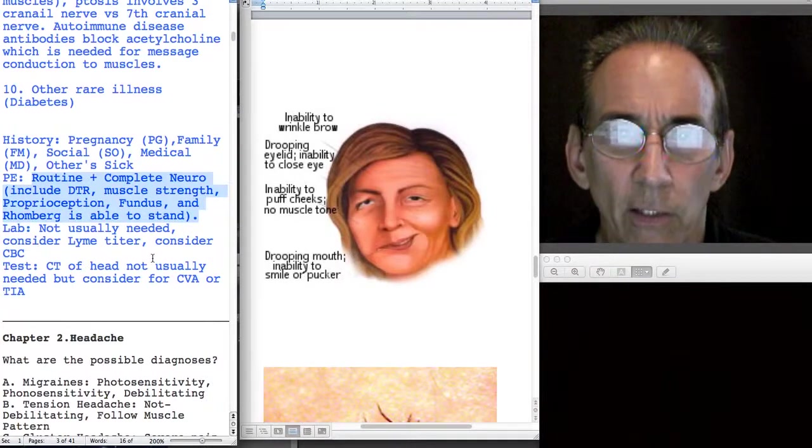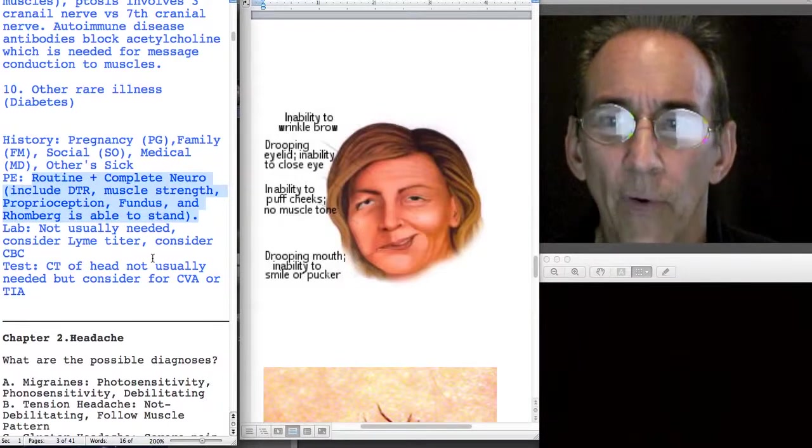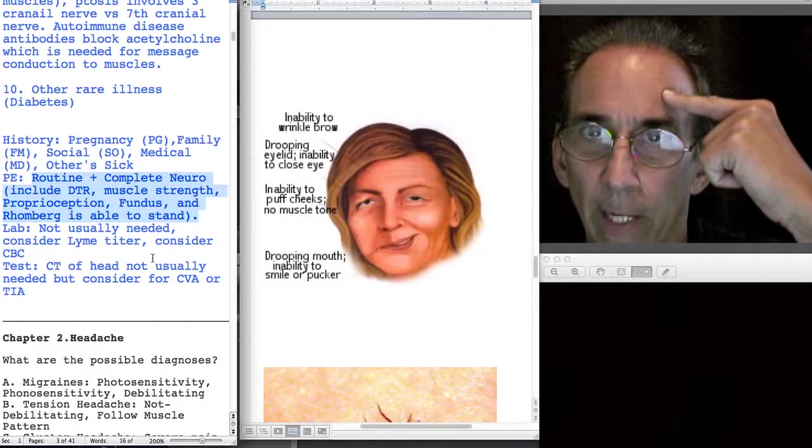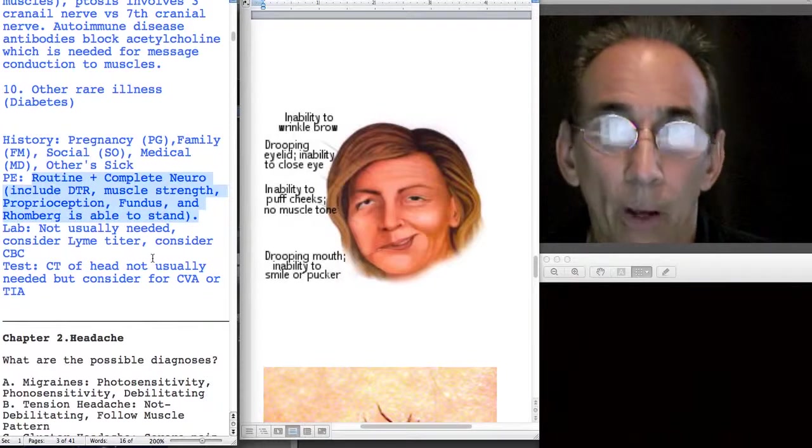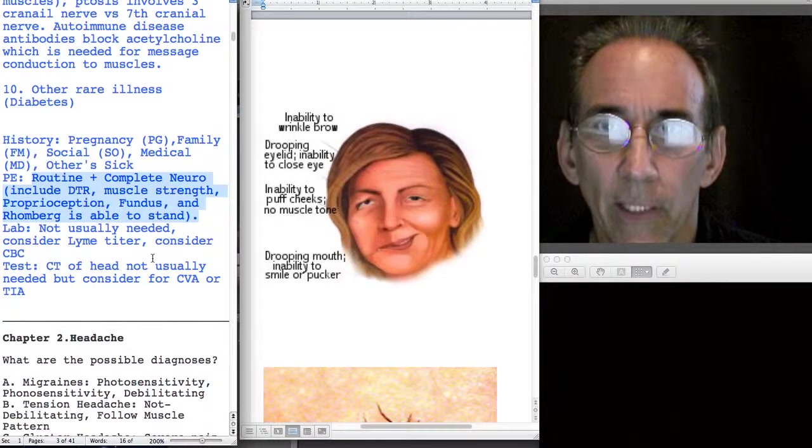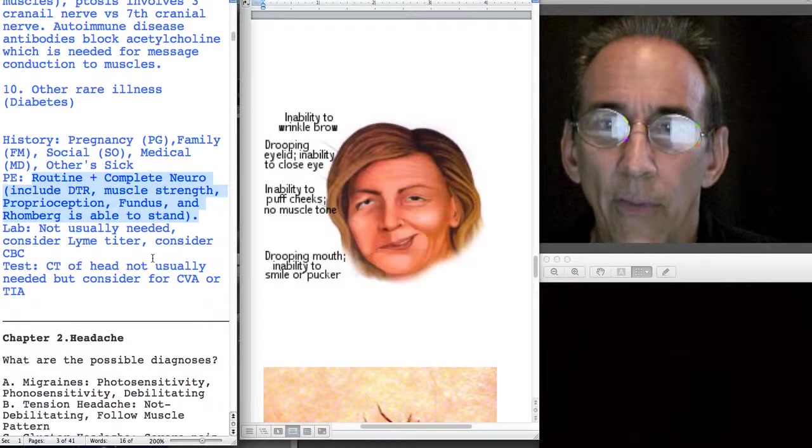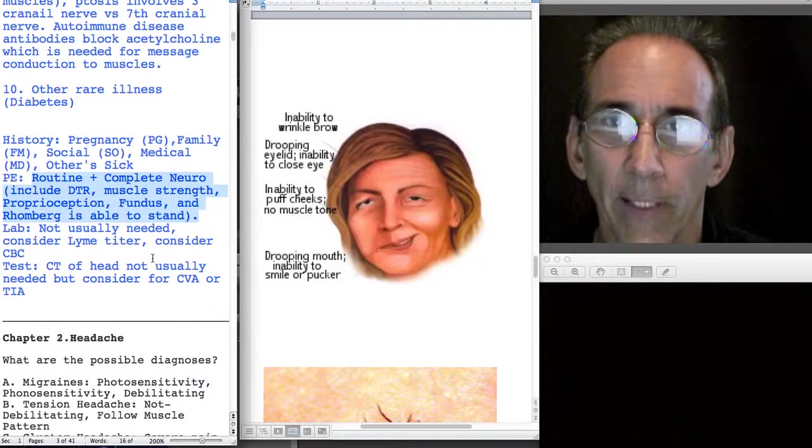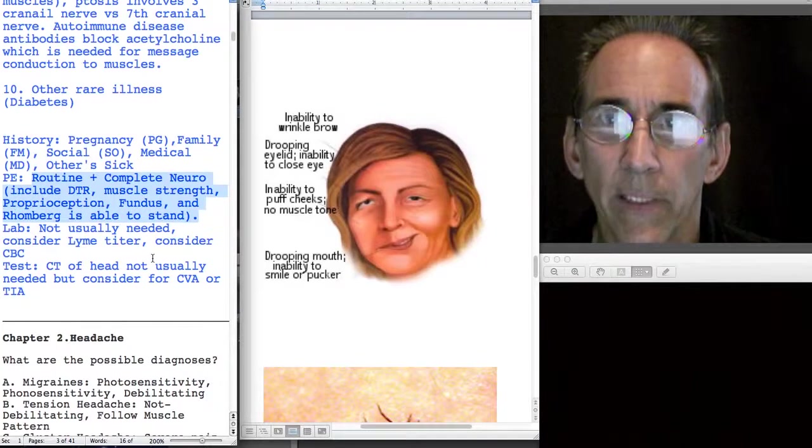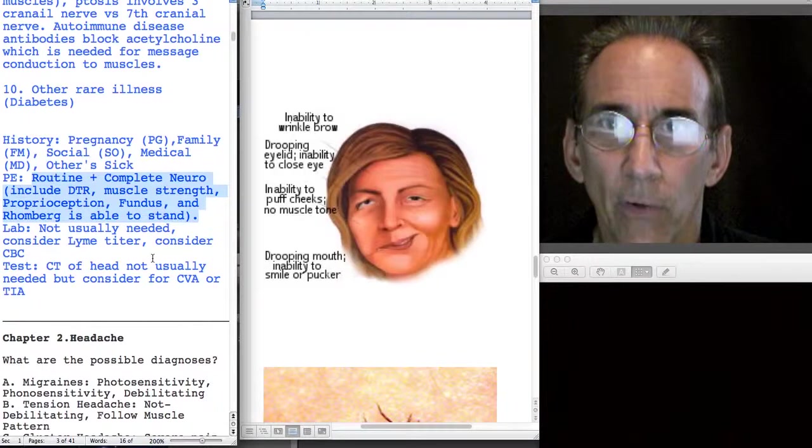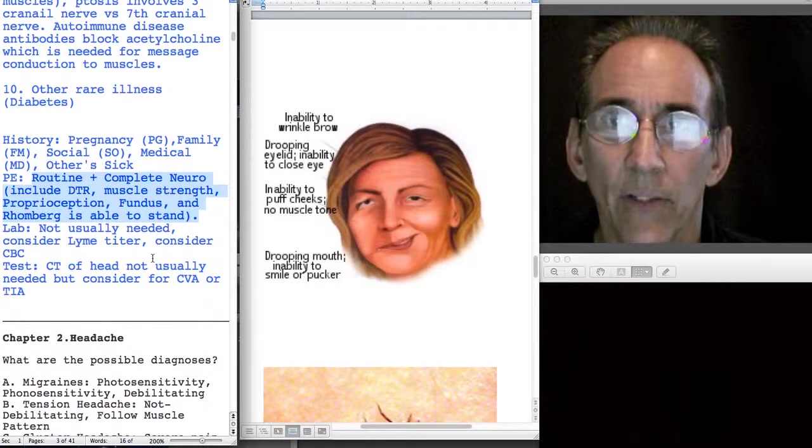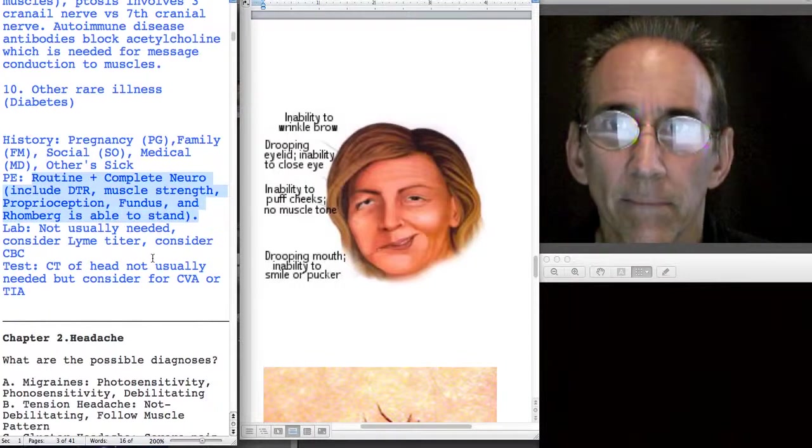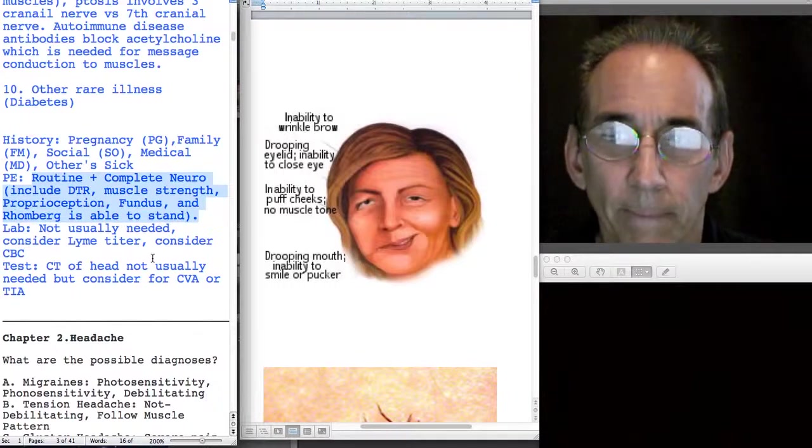So just in conclusion, remember there are very few things that are going to cause this inability of the forehead to move. Bell's palsy and Ramsey Hunt disease are two that can do that. Other ones will cause other areas of the face and eyes not to move properly, but the eyebrow, which is innervated by the seventh cranial nerve, usually does work properly in those diseases. Thank you for listening to my lesson on facial droop.